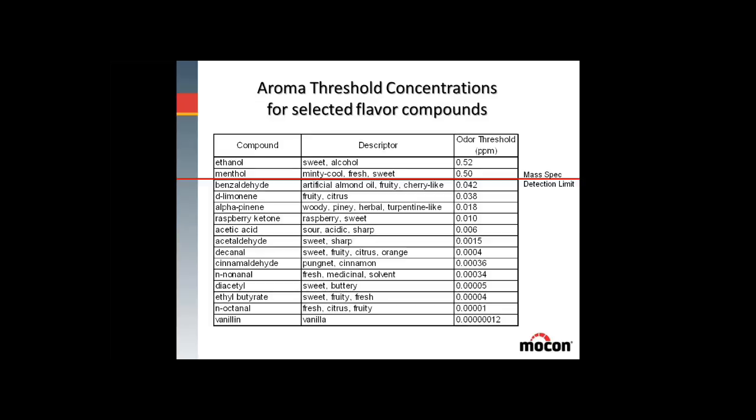For comparison, the next slide shows aroma threshold concentrations for a number of flavor compounds. Menthol, benzaldehyde, and limonene all have descriptors of minty and citrusy respectively, but their odor threshold concentrations are quite low. Compounds like vanilla are even lower. So from an analytical perspective, whether it is an odor compound or an aroma compound, you have to work with them both in the same way to perform the analysis.